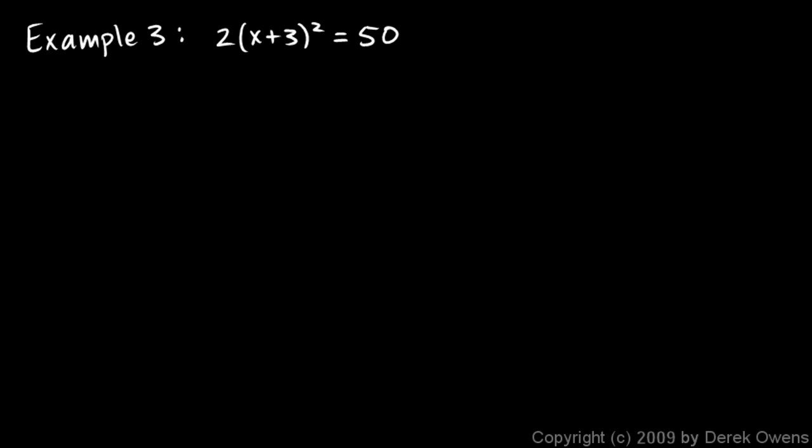So the idea here is to do a little bit of algebra to take the thing that is squared and isolate it, and then you can get rid of the square by taking a square root. In this case, I have x plus 3. That's the thing that is squared, so I need to isolate the x plus 3.